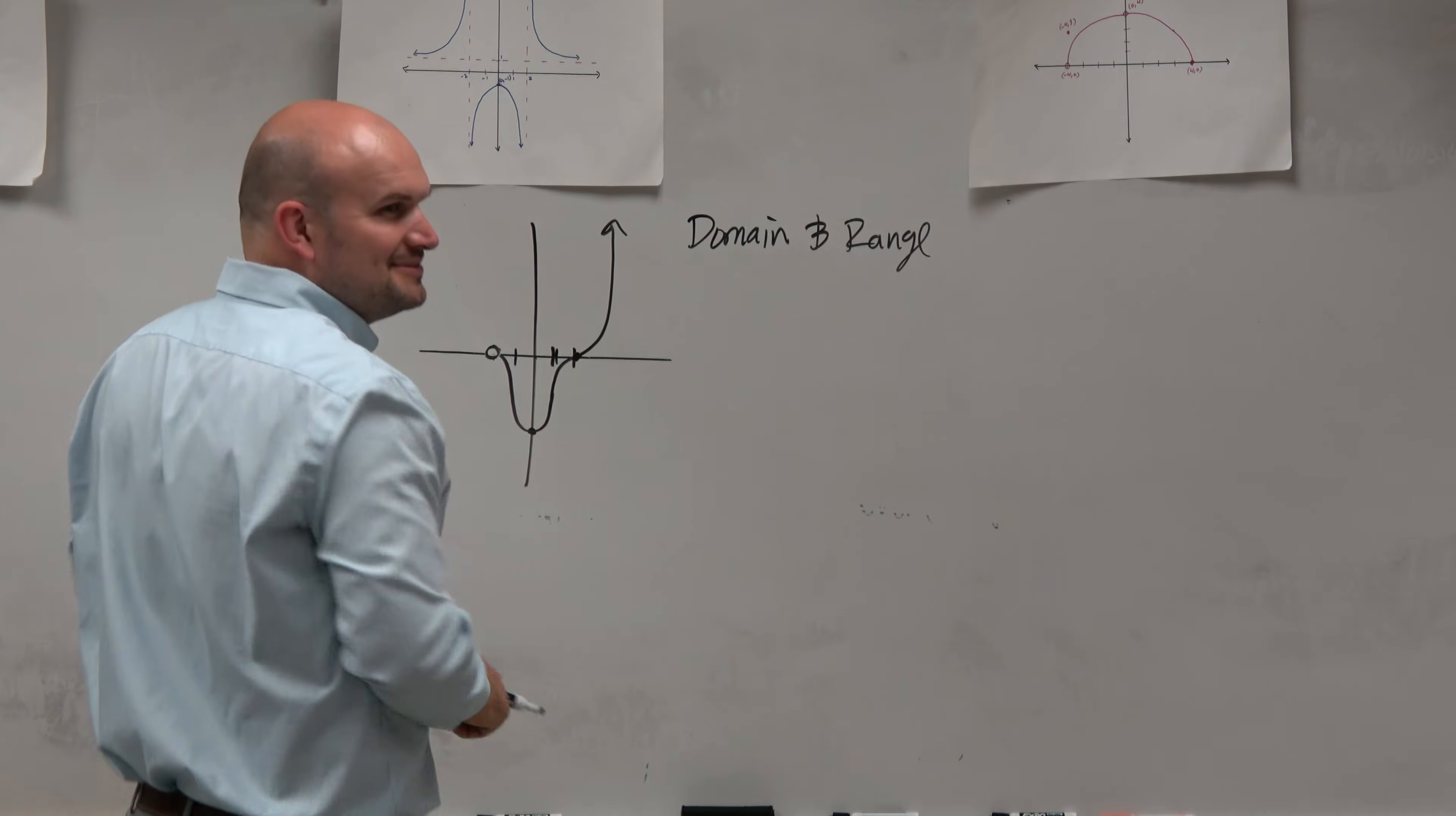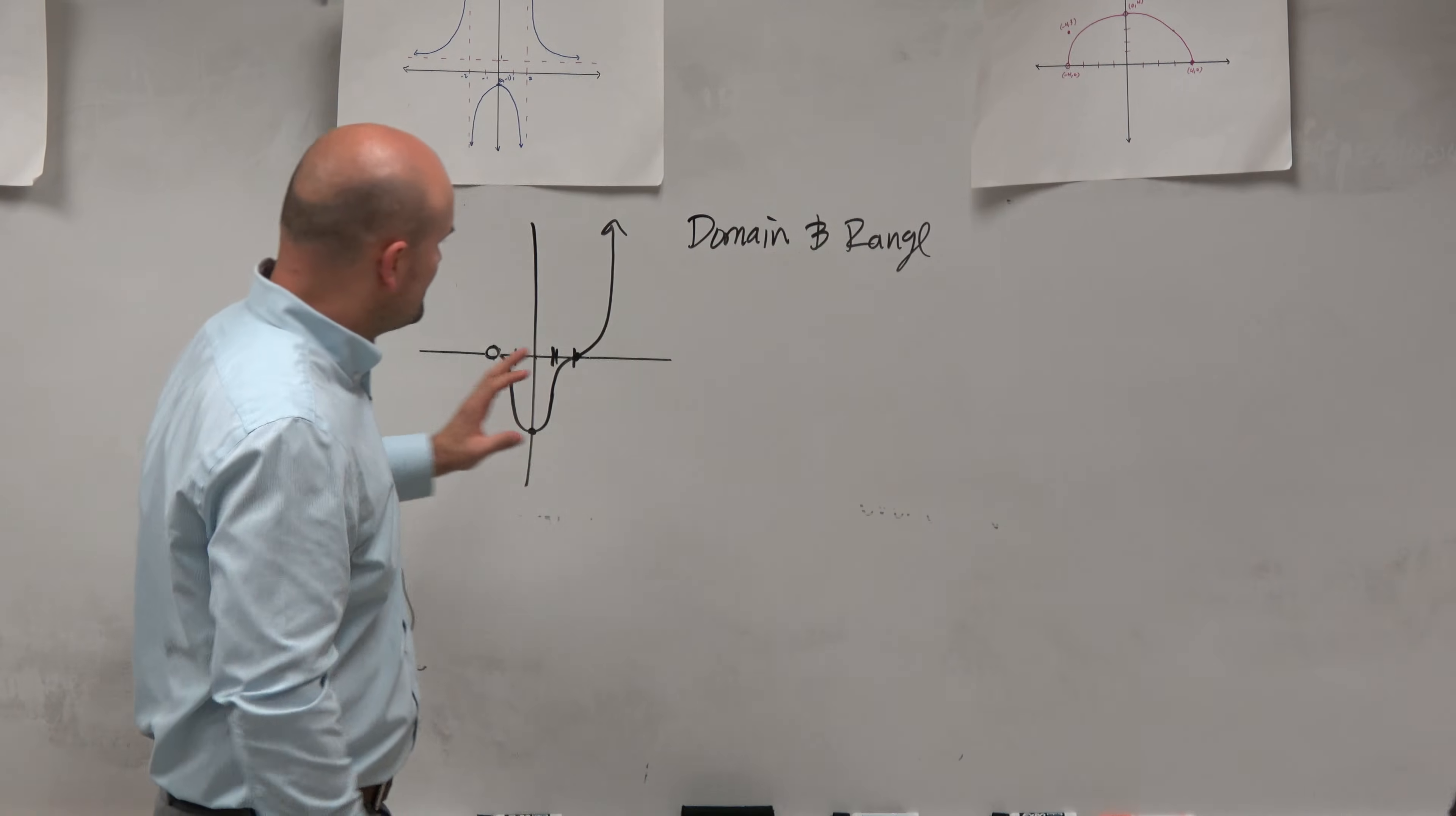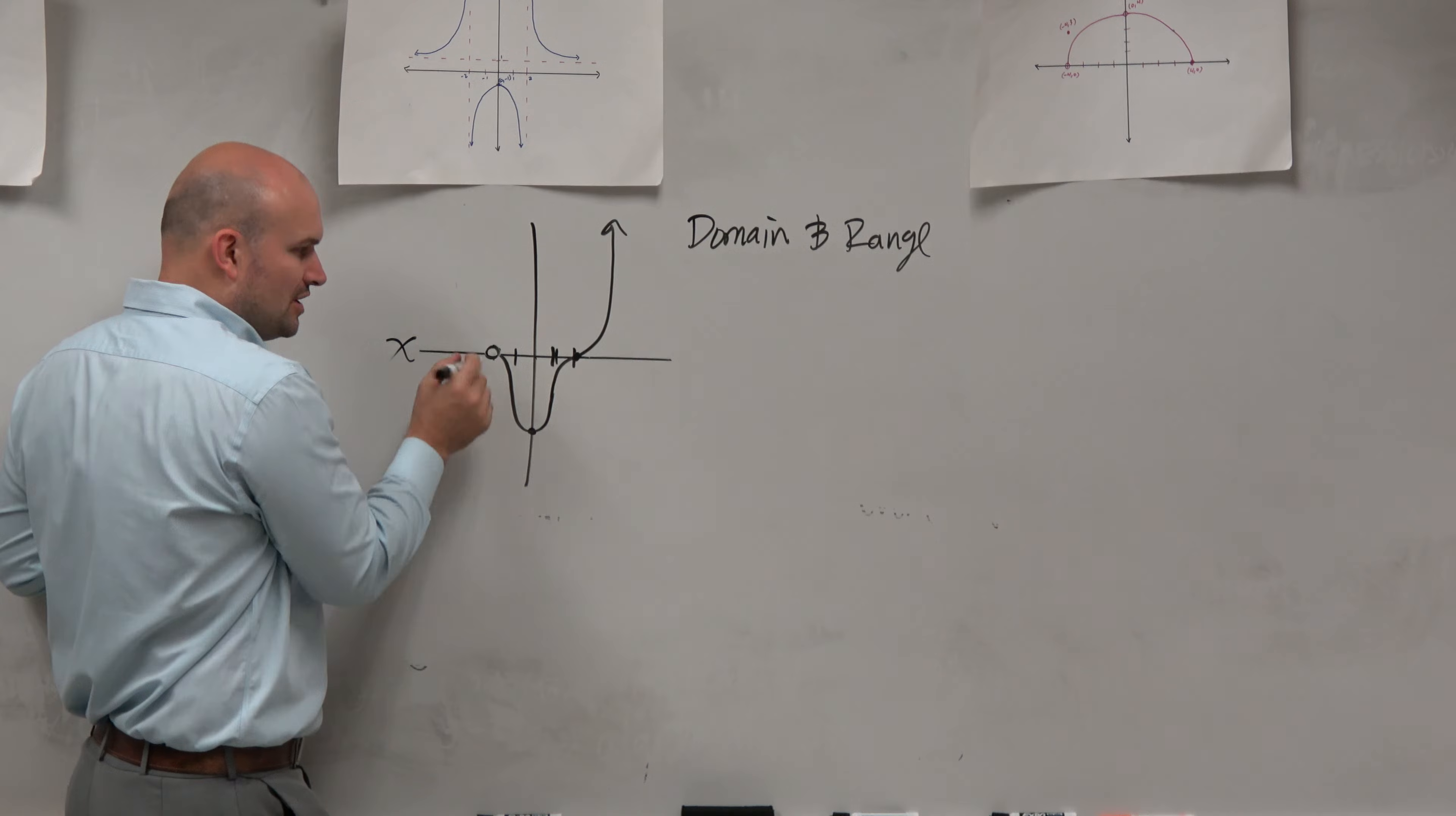So we have our domain and range. Obviously we talked about the set of all x values, how far left and how far right it goes. If we're looking at this domain, we're looking at the set of x values. How far left is this graph going to go?